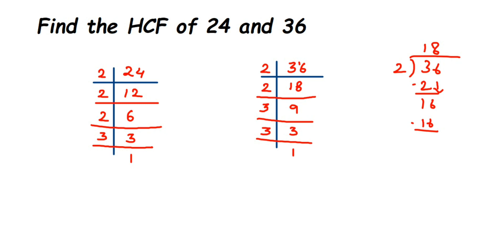Once we've done this step, I'm going to write it down once again. So 24 equals - write down all the prime factors we got - 2 times 2 times 2 times 3. Similarly for 36, write down all the prime factors: 2 times 2 times 3 times 3.